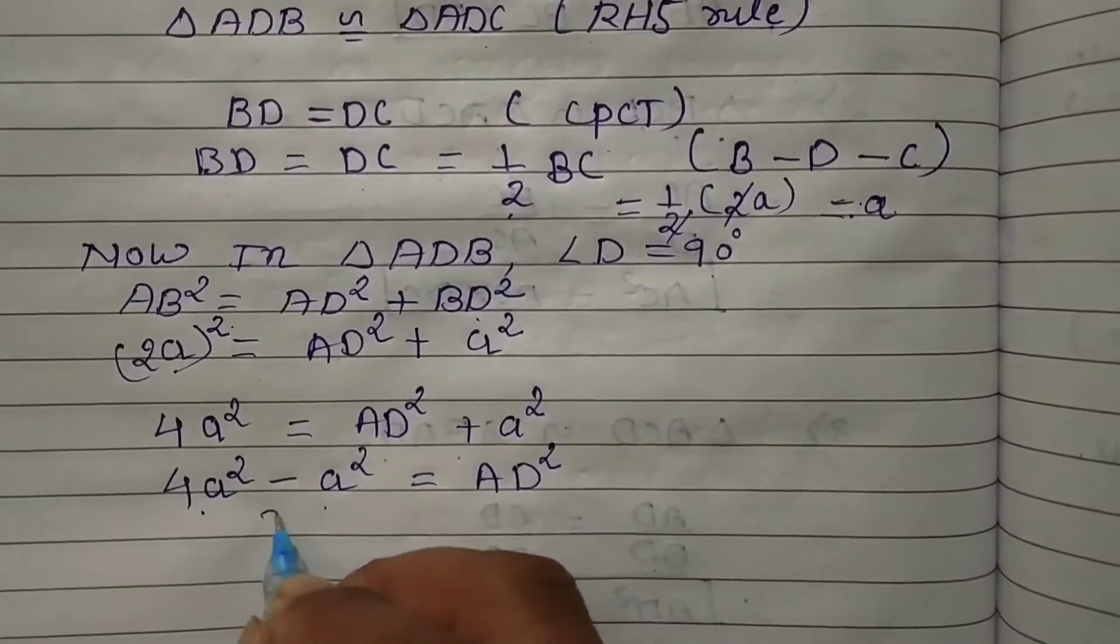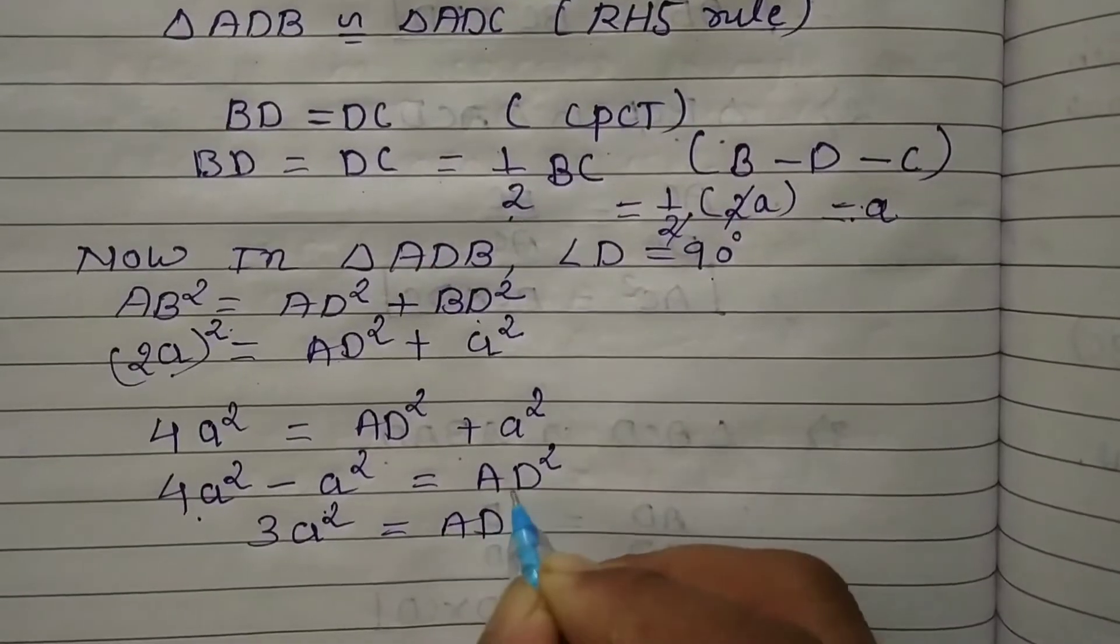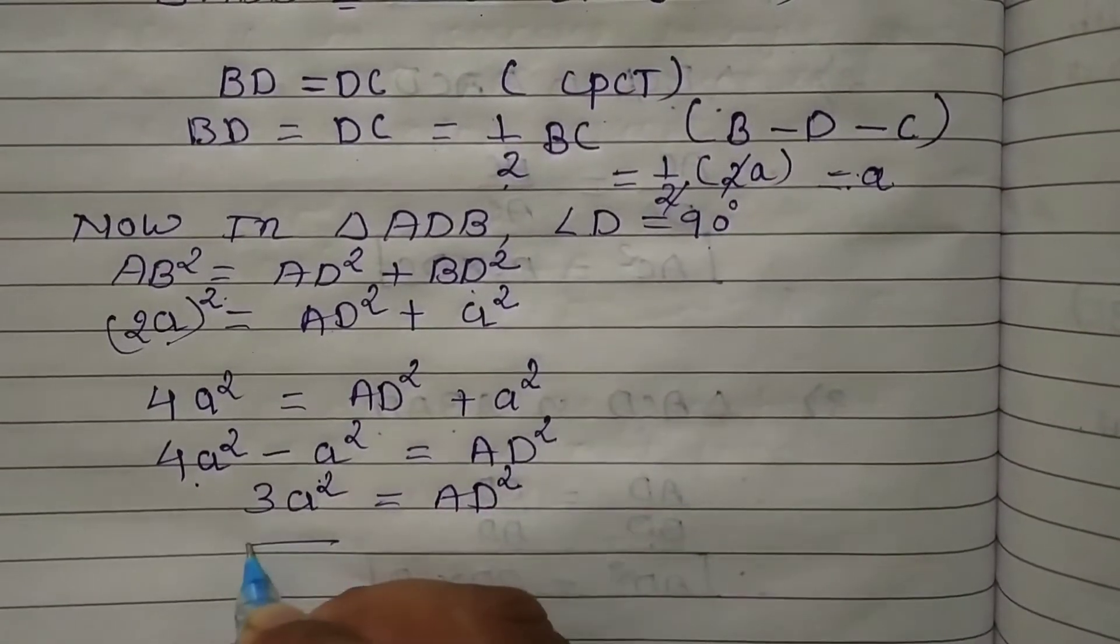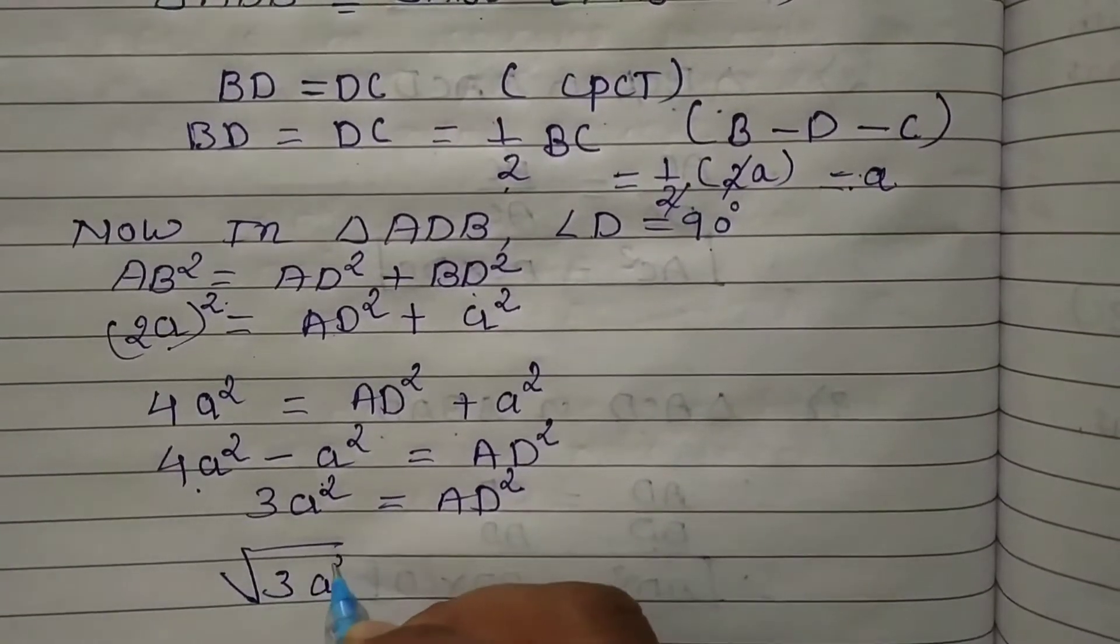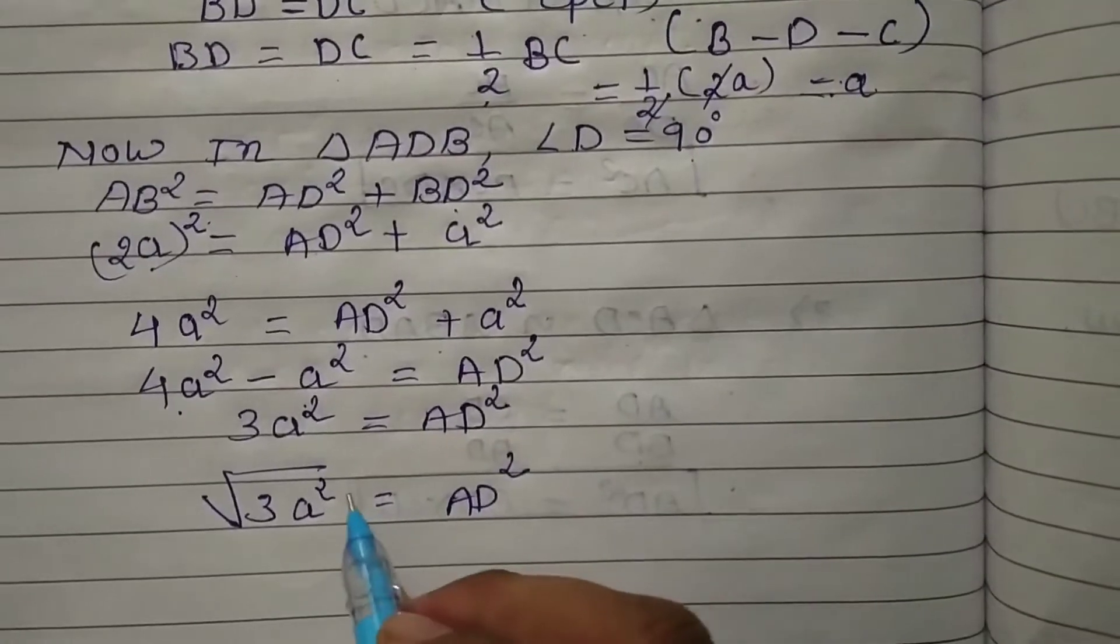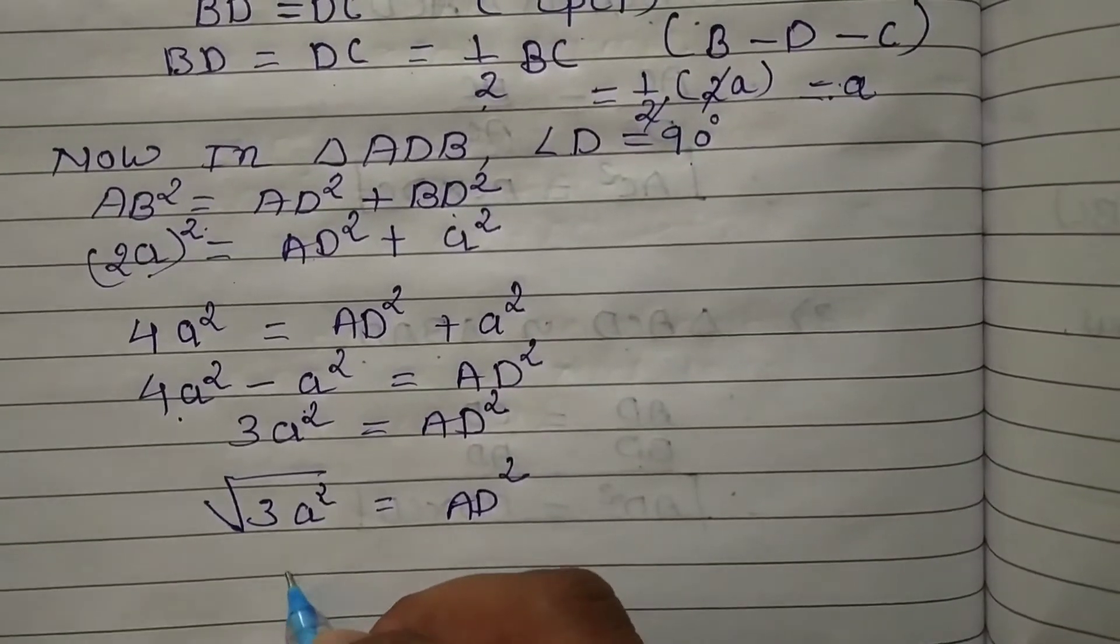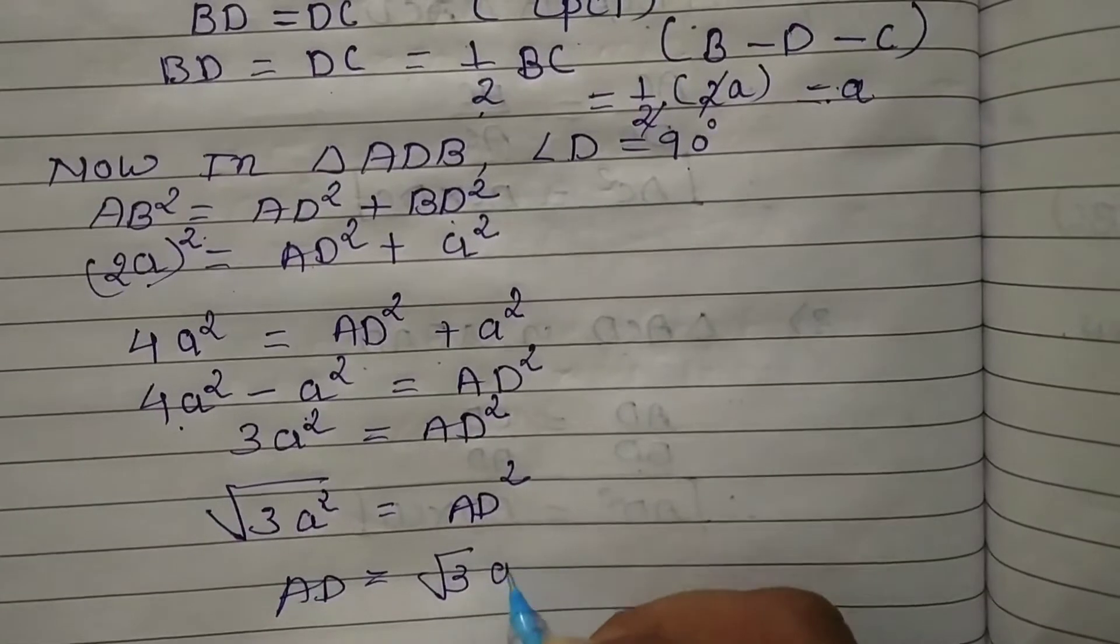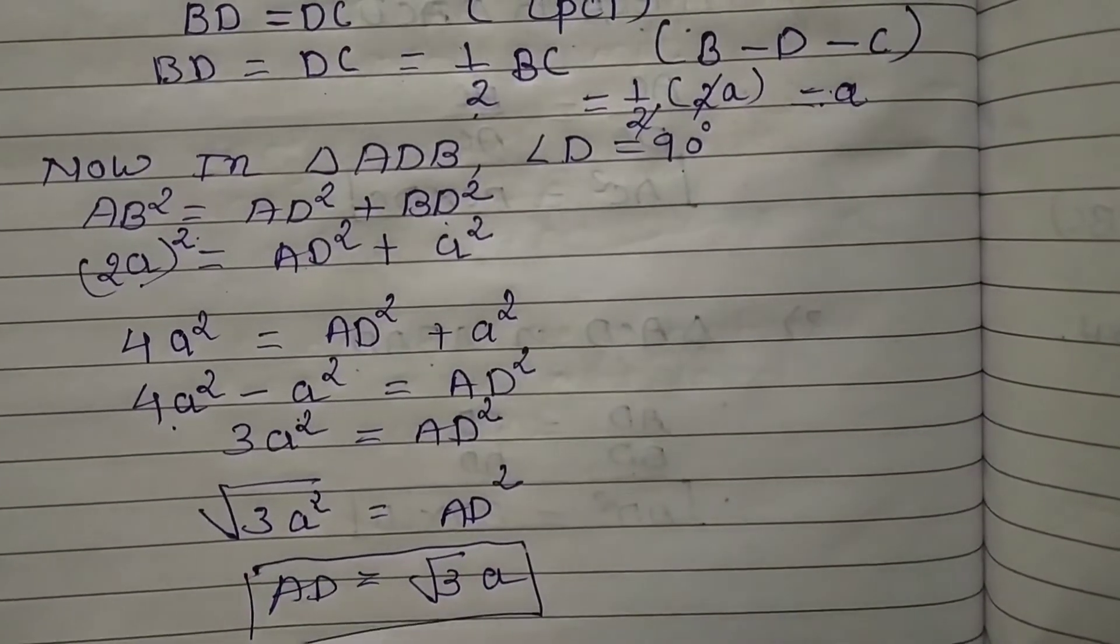4a² - a² = AD², so 3a² = AD². Taking square root on both sides: AD = √(3a²) = a√3.